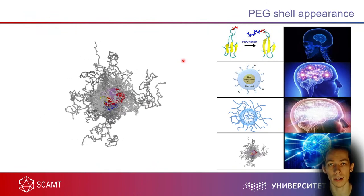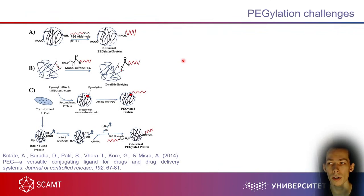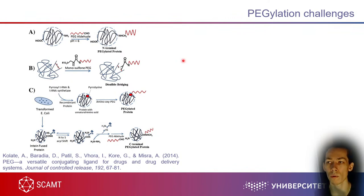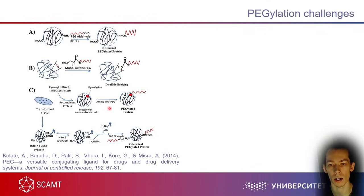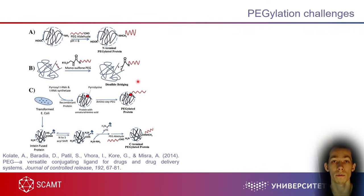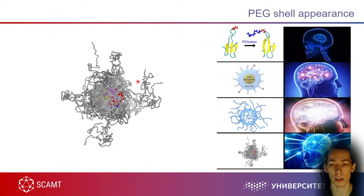PEGylation has some drawbacks, and there are many PEGylation strategies. It's not just taking PEG, mixing with your particle, and done — sometimes that works, but in advanced cases you need to modify your PEG molecules. For example, you can add sulfone groups (sulfone-PEG), NH groups, amino-modified PEGs, or aldehyde groups. There are many strategies for particular applications, including PEGylation of proteins, polysaccharides, and nanoparticles.